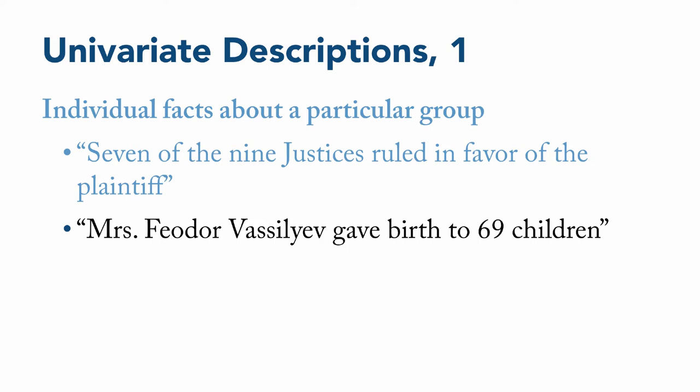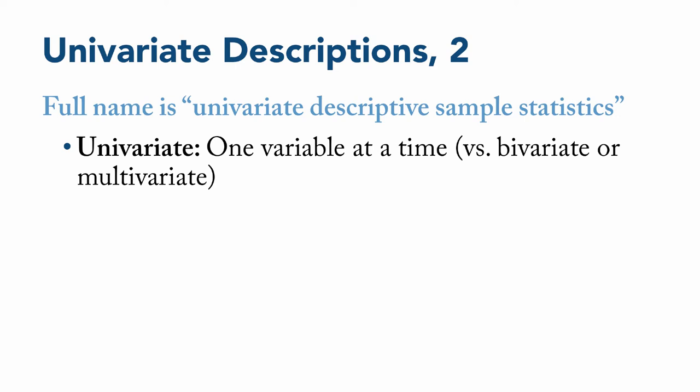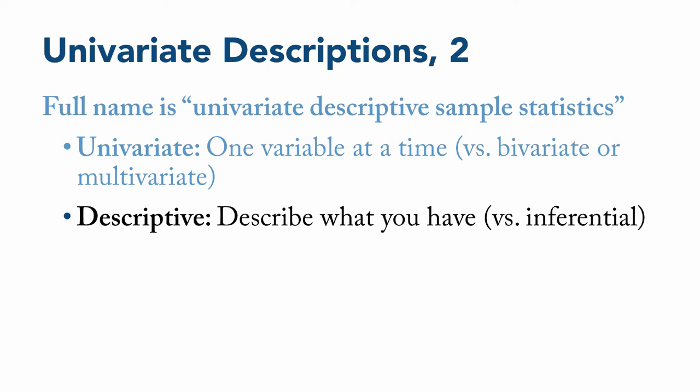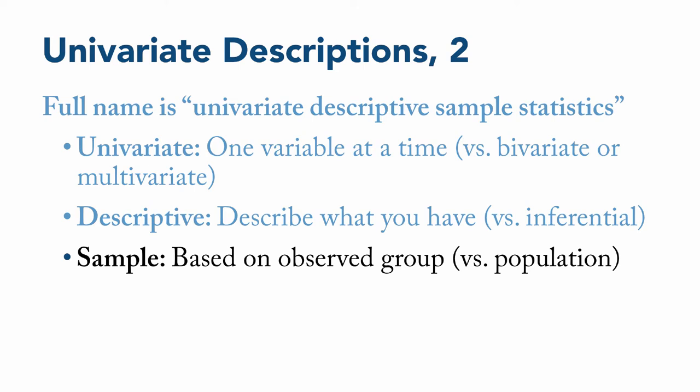Now let's explain what we mean by the term univariate statistics. In full, these procedures can be called univariate descriptive sample statistics. Each part of this name means something. They're called univariate because they present one variable at a time as opposed to two or more. They're descriptive because they describe as opposed to infer. The word sample as opposed to population is in there because these data describe the data from an observed or measured group of people. And as we've mentioned before, statistics is the term for information about a sample.